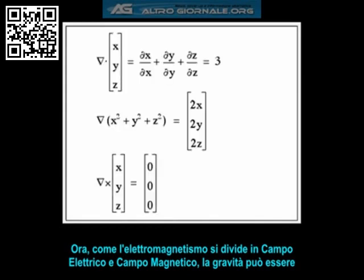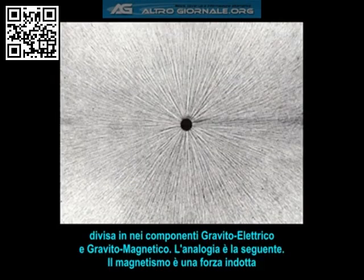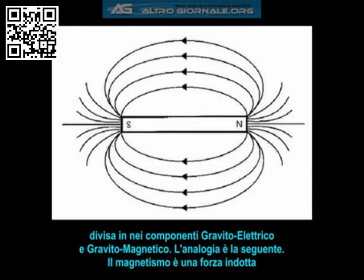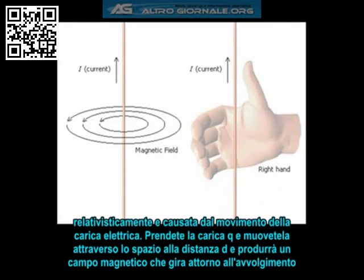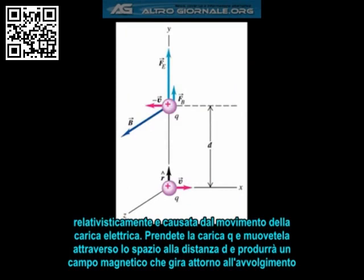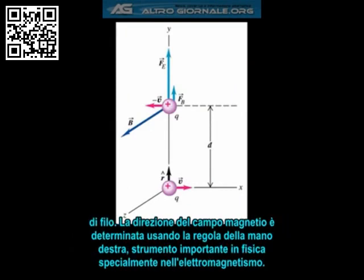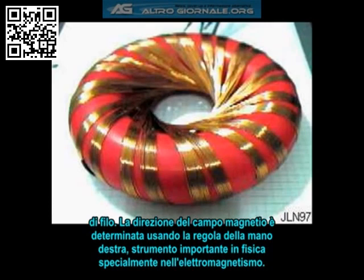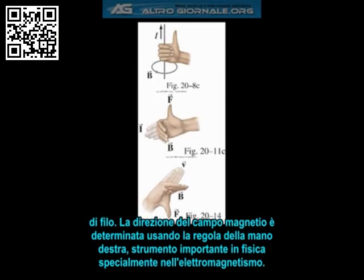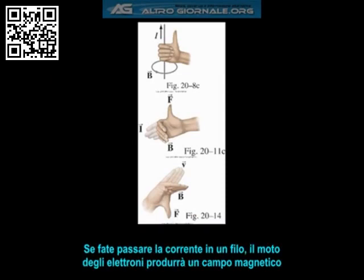Just as electromagnetism breaks down into the electric field and magnetic field components, gravity can be broken down into gravitoelectric and gravitomagnetic components. Magnetism is just a relativistically induced force caused by the movement of electric charge. Take a charge Q and move it through a space a distance D, and it will produce a magnetic field which curls around the loop of the wire in a corkscrew. The direction of the magnetic field is determined by using the right-hand rule, a very important tool in physics and especially electromagnetism.